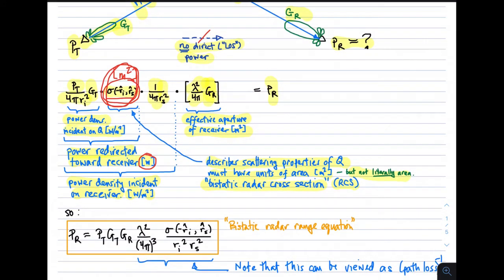Putting this all together, we get the expression in the orange box: the received power is proportional to the transmit power, the directivity of the transmitter, and the directivity of the receiver. We have a lambda squared, a 1 over 4 pi cubed, the RCS, the range from transmitter to Q squared, and the range from Q to the receiver squared. This is known as the bistatic radar range equation.